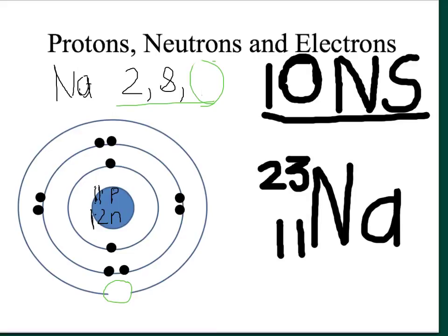So those electrons disappear. The electron that was here disappears, and the number 1 changes. And so what we get now is an electron configuration of 2, 8, 0, and no electron there.